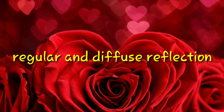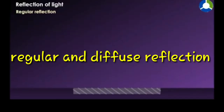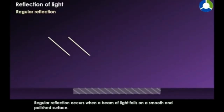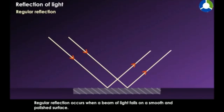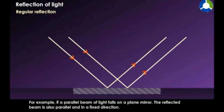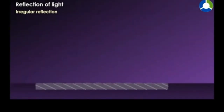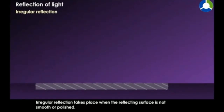Regular and Diffuse Reflection. When light falls on a mirror, steel plate, or smooth floor tile, it is reflected regularly. When light falls on a mirror, the light is reflected — this is a regular reflection, because the surface is smooth.